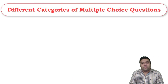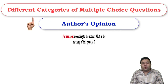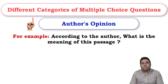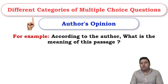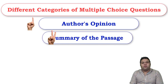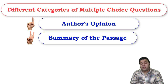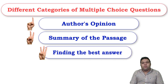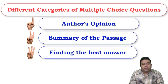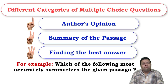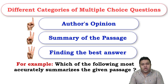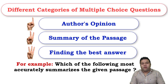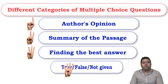There are different categories of MCQs. The first is about the author's opinion — for example, 'what does the author consider important?' The second is about the summary of the passage. The third is about finding the best answer, such as 'which most accurately summarizes the passage?' — where there could be more than one possible answer but only one best answer. The fourth type is true, false, or not given.